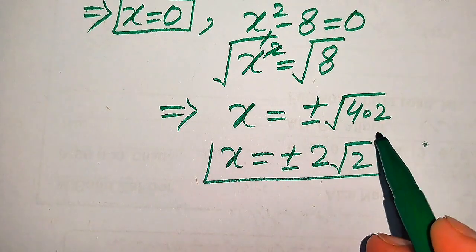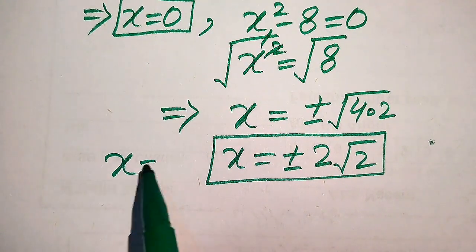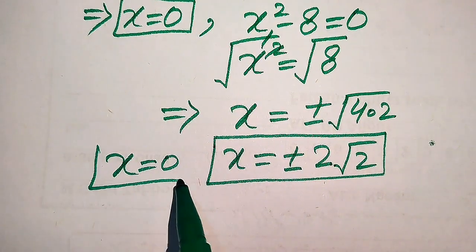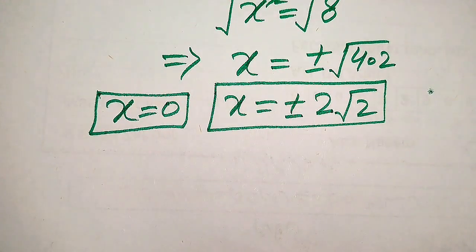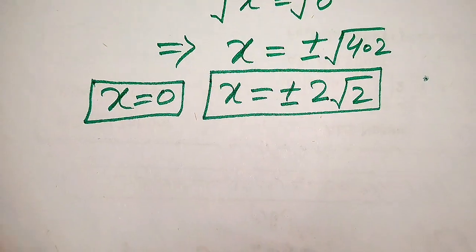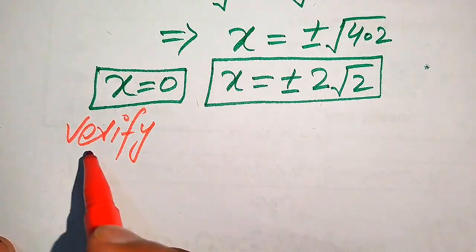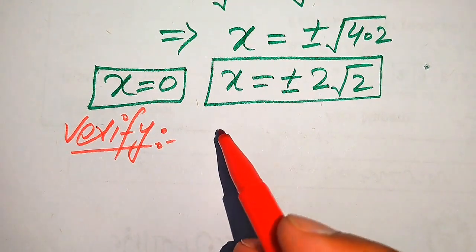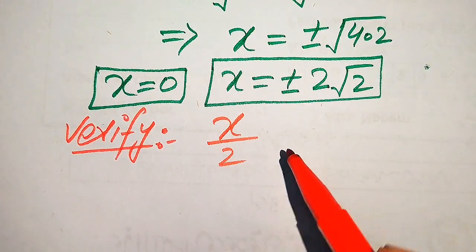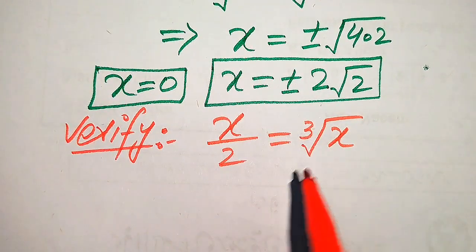So the other two roots are x equals plus or minus 2 times square root of 2. Finally we have three roots of the given equation. In the next steps we verify these three roots and check which roots satisfy the original equation statement x over 2 equals cube root of x.